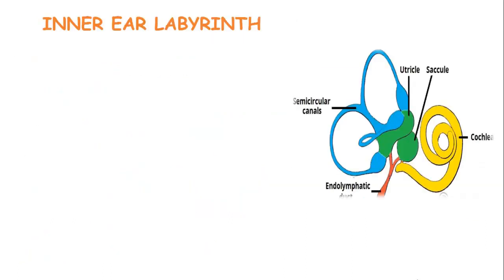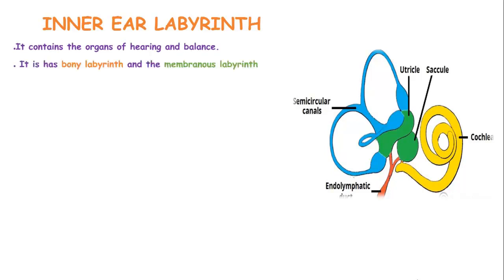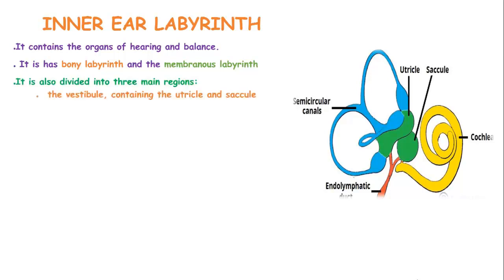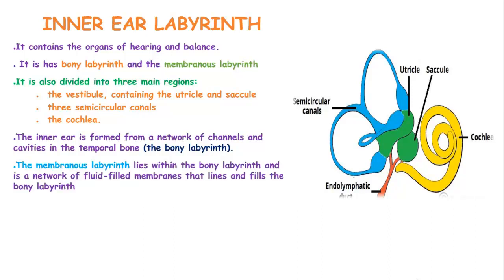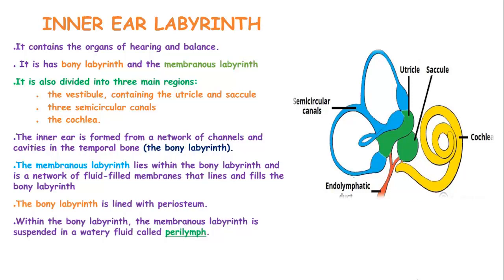The inner ear, or labyrinth, contains organs of hearing and balance. It has the bony labyrinth and the membranous labyrinth, and is divided into three main regions: the vestibule, which contains the utricle and the saccule; three semicircular canals; and the cochlea. The inner ear is formed from a network of channels and cavities in the temporal bone, known as the bony labyrinth. The membranous labyrinth lies within the bony labyrinth and is a network of fluid-filled membranes. The bony labyrinth is lined with periosteum, and within it the membranous labyrinth is suspended in a watery fluid known as perilymph, while the membranous labyrinth itself is filled with endolymph.